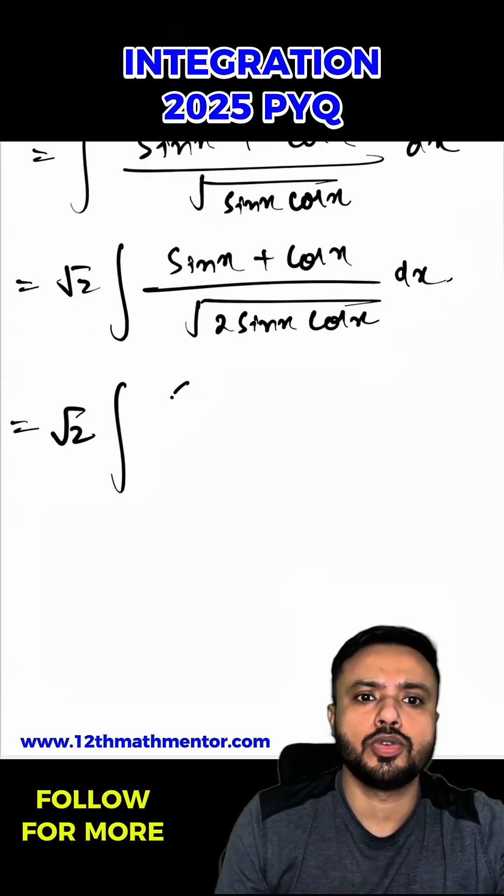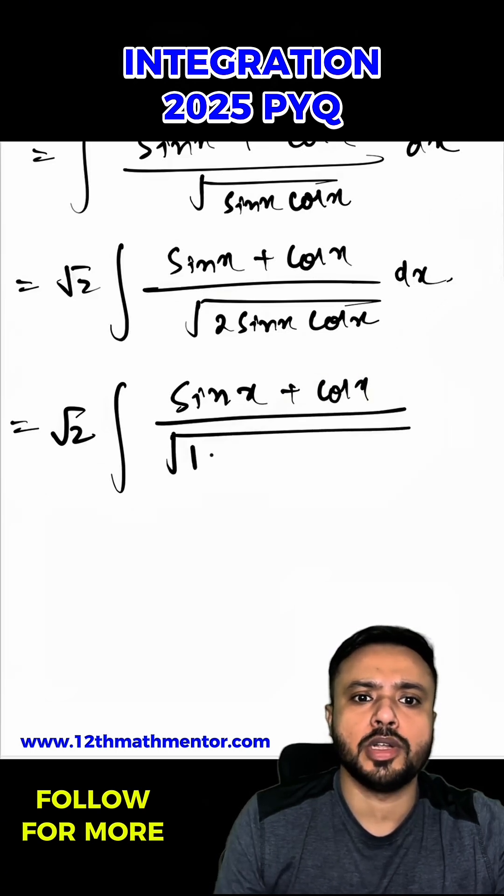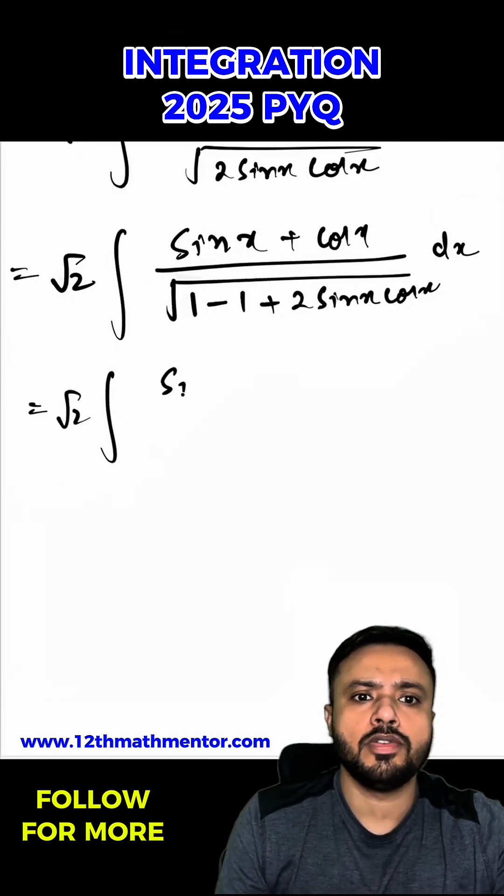So I can write it as √2(sin x + cos x). Now inside the root, I'm going to add and subtract 1, so I can write as 1 - 1 + 2 sin x cos x dx. So √2 integral of (sin x + cos x) upon root of...